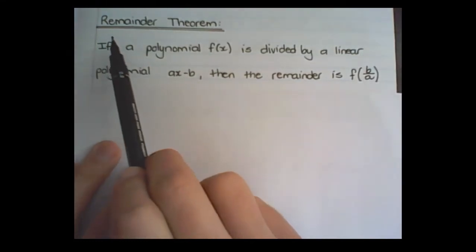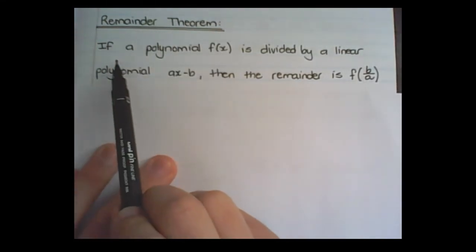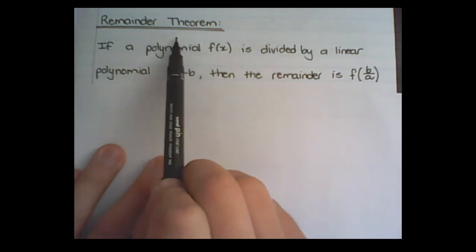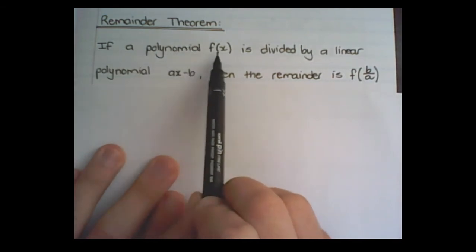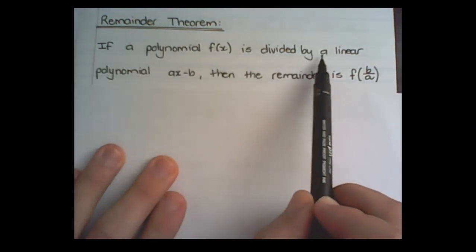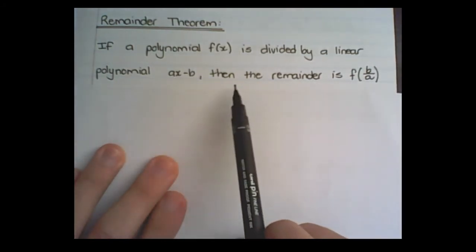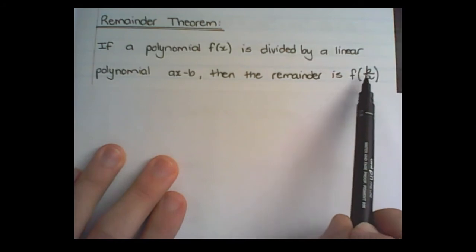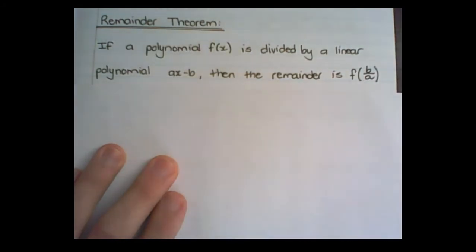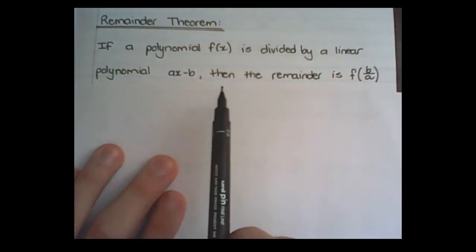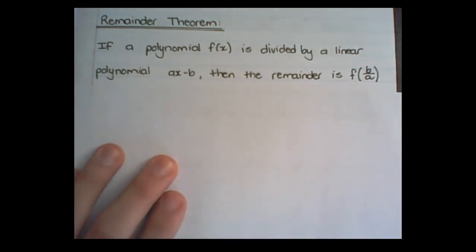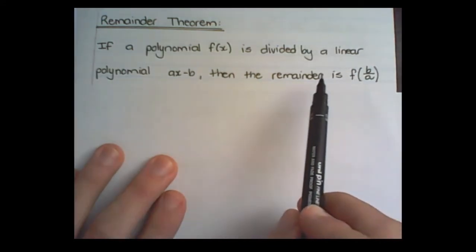We are now moving on to the remainder theorem. If a polynomial, that is an algebraic expression f(x), is divided by a linear polynomial ax - b, then the remainder is f(b/a). This sentence can look quite daunting, but it's actually a very simple concept.